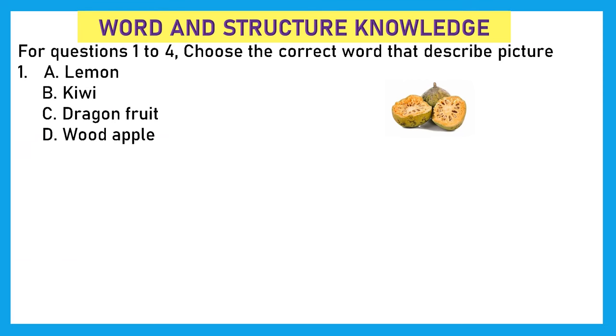First section is word and structure knowledge. For questions 1 to 4, choose the correct word that describes the picture. Can you look at the picture and guess the fruit? I am going to give you the options: lemon, kiwi, dragon fruit, or wood apple. This is wood apple. Option D is the right answer.